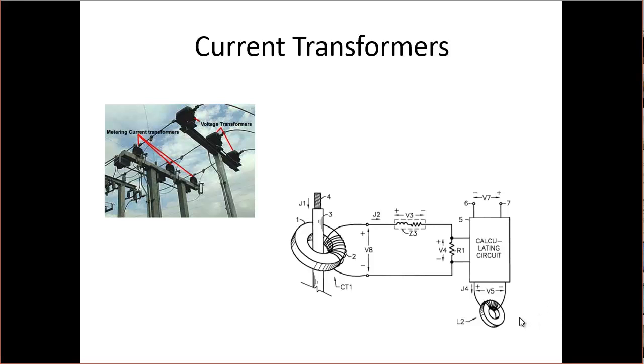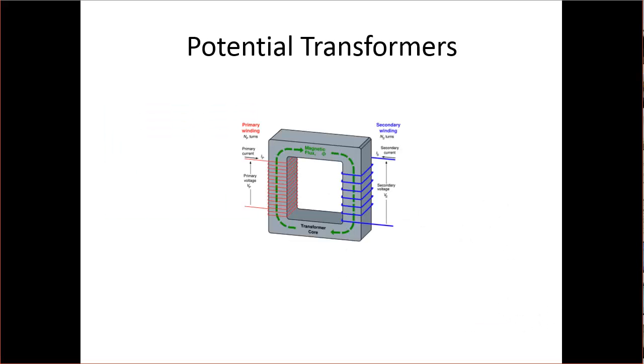In our next slide, I've got a potential transformer. So again, this is sitting up on the line. It's using the principle of inductance again, and what I'm doing is I'm actually hooking this to the transmission line. And it's going to have a voltage, a very high voltage, and then on this end of the transformer, I'm going to get a smaller voltage,